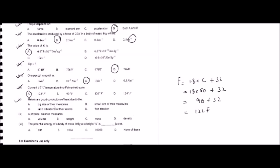Question number ten: metals are good conductors of heat due to what? Remember, metals are good conductors of heat because they have free electrons. So option D is the right answer.